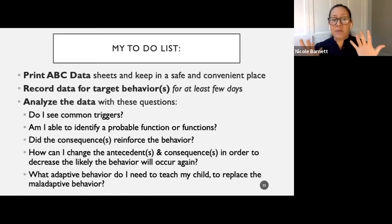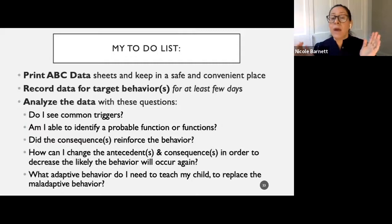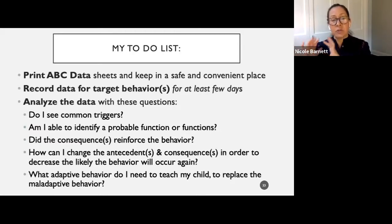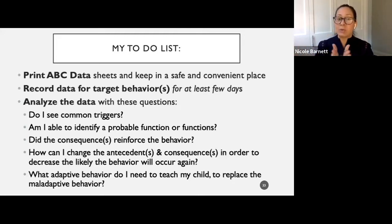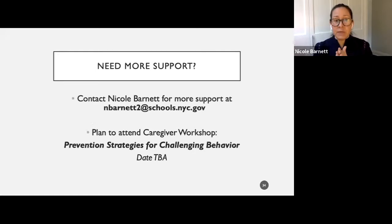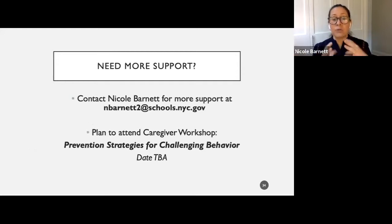Last: what adaptive behavior do I need to teach my child to replace the maladaptive behavior? That is a huge one. You cannot just eliminate problem behavior without teaching new skills. The problem behavior is happening for a reason — there's a function, something your child is trying to communicate. If they don't have the skills to do it appropriately, you're not going to see maladaptive behavior decreasing. We call it a replacement behavior: are they trying to escape something? Teach them how to communicate that. Are they trying to get something? Teach them how to ask for things they want. If you need more support with ABC data collection and analyzing the functional assessment, reach out to me and I will help.